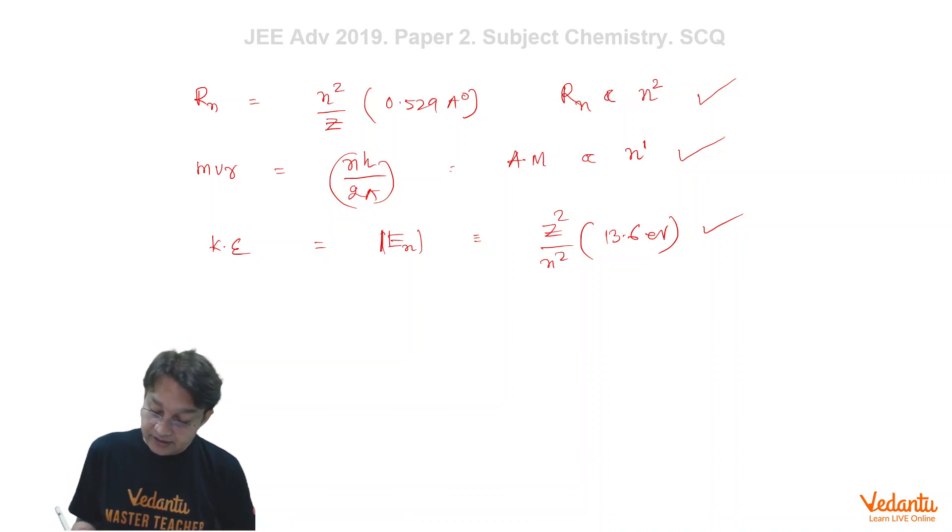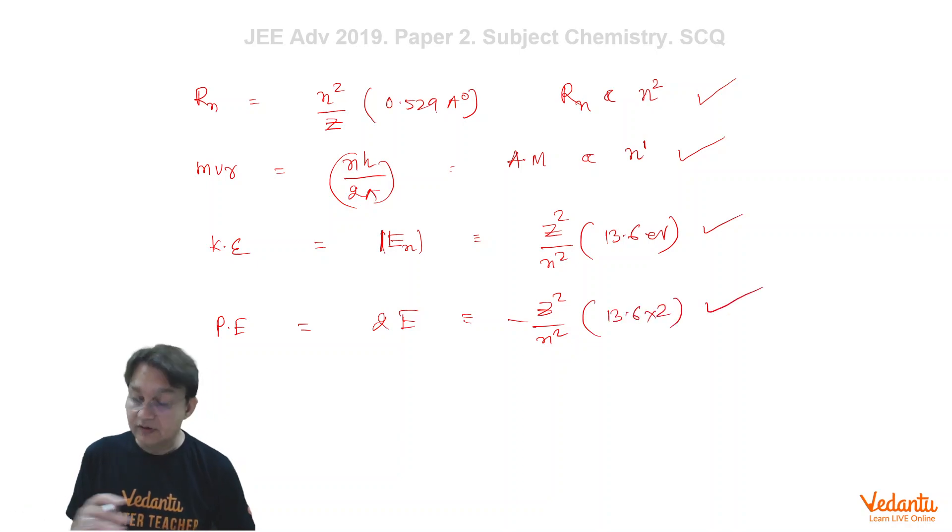And similarly potential energy, if you remember, potential energy equals simply 2 times of energy. And so it is also equal to Z square upon n square with negative sign into 13.6 into 2. So if these facts are clear then problem is pretty simple straightforward. Both problems are pretty straightforward related problems.